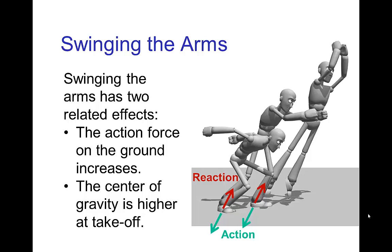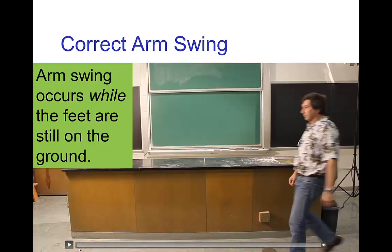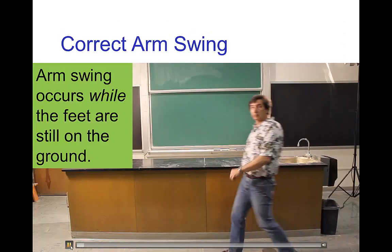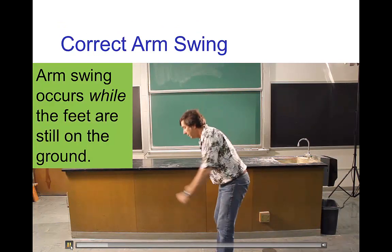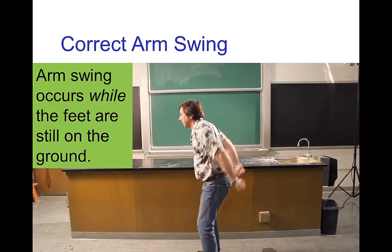And then also once you take off, because your arms are raised, your center of gravity is already higher up off the ground. The correct way to swing the arms when jumping is to swing them while the feet are still in contact with the ground. Let's just look at a quick video of that. So this is the correct way of swinging the arms in a jump.